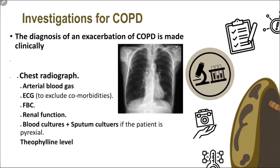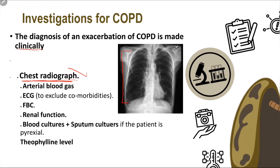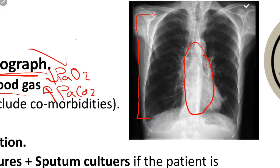The investigations for COPD — although the diagnosis is made clinically — include a chest X-ray to find any consolidation indicating pneumonia. Patients with chronic obstructive pulmonary disease typically show increased lucency of the lung, barrel chest, and a tubular heart shape. On ABG you must look for two main important things: oxygen and CO2. Oxygen is usually low and CO2 is usually high, which indicates type 2 respiratory failure.